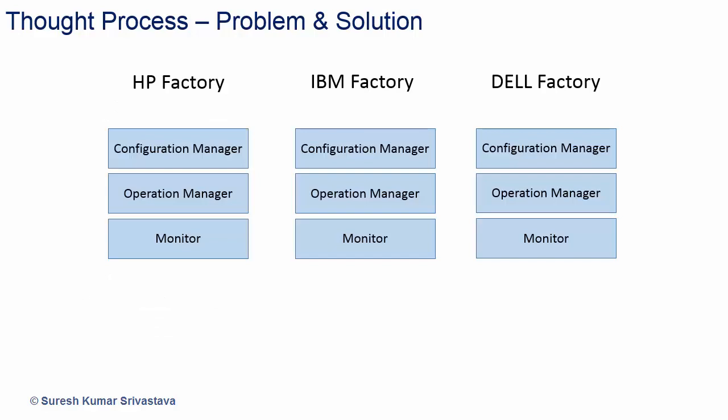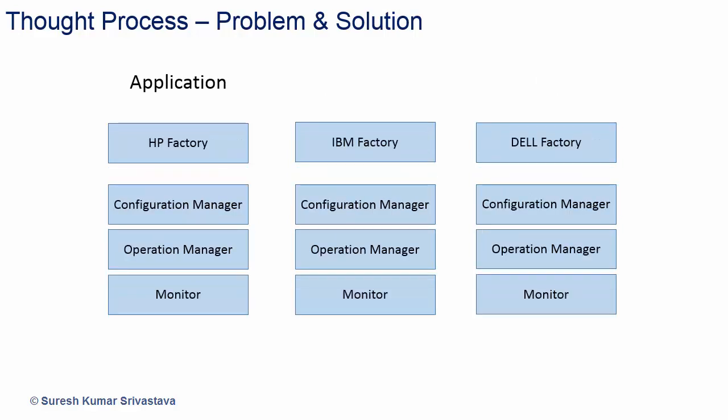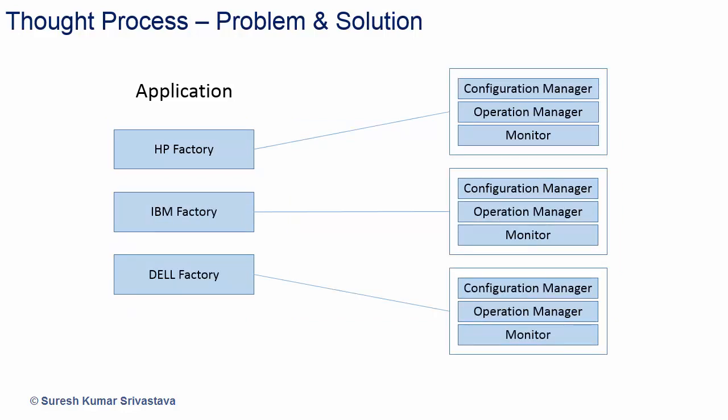So we will come up with factories: HP Factory, IBM Factory, and Dell Factory. The application will use these factories. HP Factory will create the family of objects to manage the HP system, IBM Factory for the IBM system, and Dell Factory for the Dell system. But again, the application will need to know which factory to use — for example, how will it know Configuration Manager of HP, Operation Manager of IBM, and Monitor of Dell?